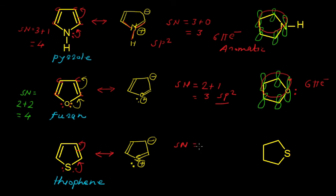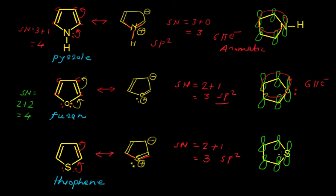Calculating the steric number of sulfur in the resonance structure: we have 2 sigma bonds with the two adjacent carbons — out of the double bond, 1 is sigma and 1 is pi — plus 1 lone pair of electron. This gives 3, meaning sulfur is sp2 hybridized with 3 sp2 hybrid orbitals. We draw the p orbitals on carbons and on sulfur as well. One lone pair remains on sulfur while the other lone pair gets delocalized into the ring, giving 6 pi electrons in the ring. Therefore thiophene follows all conditions of Hückel's rule for aromaticity, and thiophene is aromatic.